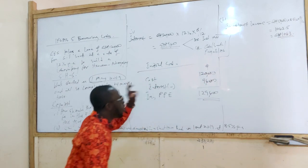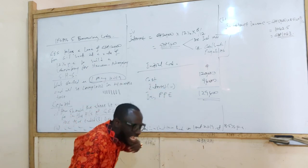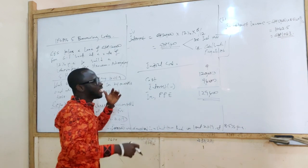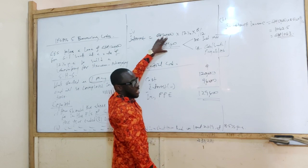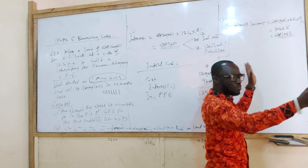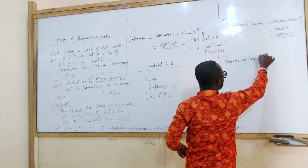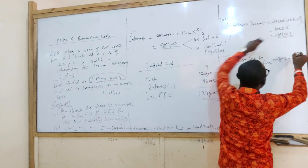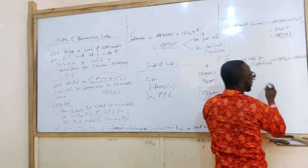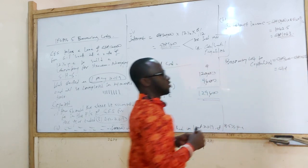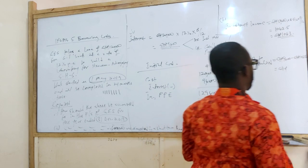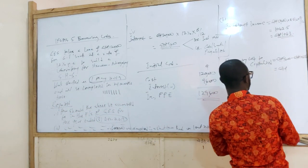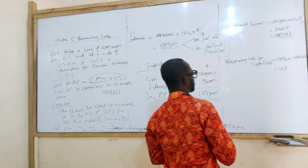So 1063 Ghana cedis. Listen carefully. We said the borrowing cost to be capitalized should be the borrowing cost incurred during that period less any investment income from temporary reinvestment. In this case, this is the borrowing cost. Are we still bearing this cost? Yeah, we are. Yes. But we are receiving what? This income for that period. So the borrowing cost that we're going to be capitalizing will be equal to 9,600 minus 1,063. What do I have? 8,537.